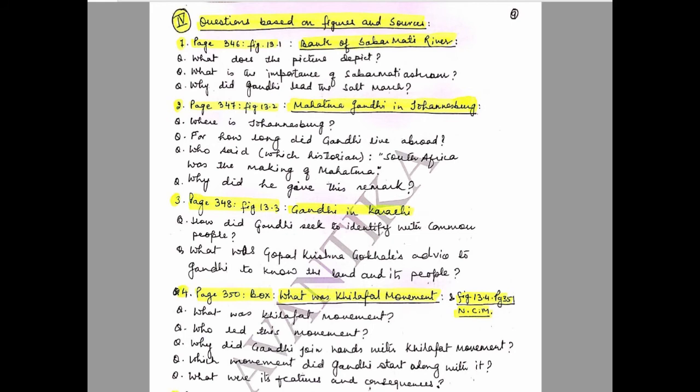Question 2: Page 347, Figure 13.2 — Mahatma Gandhi in Johannesburg. Questions: Where is Johannesburg? For how long did Gandhi live abroad? Which historian said that 'South Africa was the making of Mahatma'? Why did this historian give this remark?